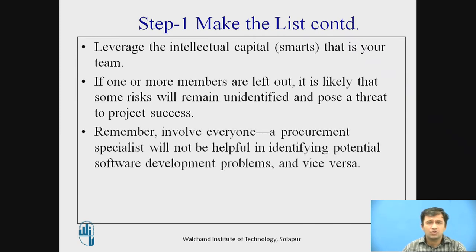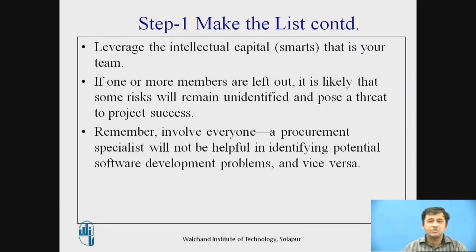Remember: involve everybody. For example, a procurement specialist who handles purchasing will not be helpful in identifying potential software development problems, and vice versa. A procurement manager will not do the work of software development or system process changes. Similarly, if software development people are present and we are working for a manufacturing organization, we must involve the relevant person for procurement, because software people don't know those steps in depth. This is a simple example — think of the probability of risk possibilities across the whole project, and there will be many.